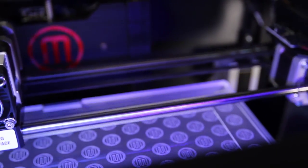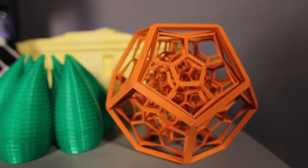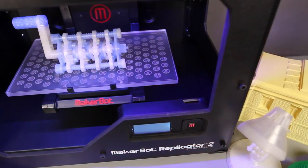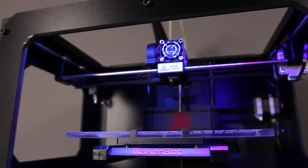The sleek design of the MakerBot Replicator 2 desktop 3D printer means that not only will you be able to make beautiful things, but it'll look good doing it. This machine is made to look good in your office or in your home.